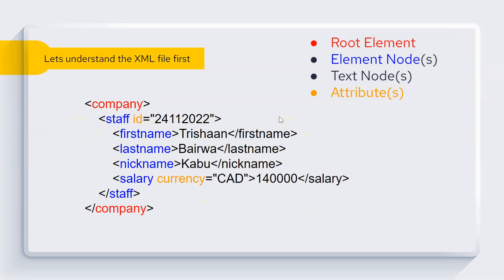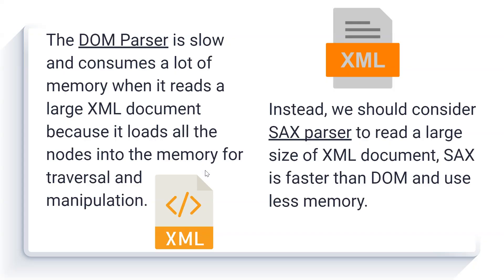The first thing we need to understand is the XML file structure. The very first tag highlighted in red is called 'company' — that's the end tag — and this is known as the root element. Tags highlighted in blue like staff, first name, last name, nickname, and salary are known as element nodes. The values in black like Trishan, Varva, and Kabu are known as text nodes, and things like ID and currency shown in yellow are known as attributes.